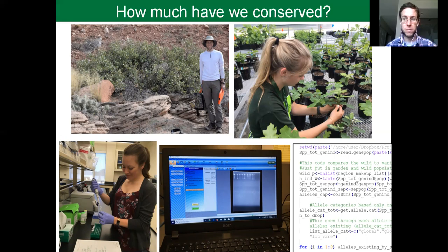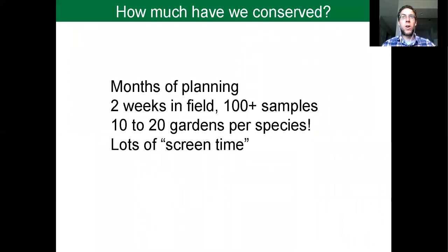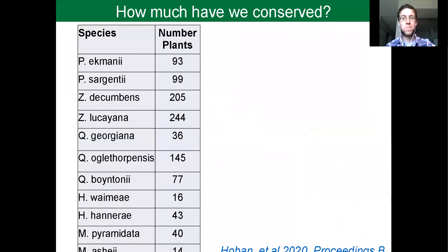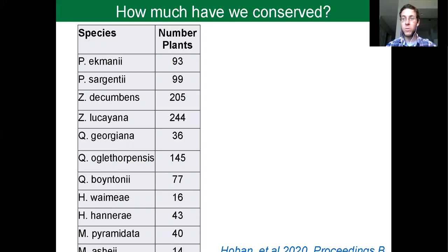A lot of planning, field work, and analysis goes into the results I'm going to show you. Shown here are the number of plants conserved in botanic gardens for these 11 taxa. You can see there's a big range, from about 15 to over 200. Even without looking at genetic diversity directly, we can probably guess that there are very different amounts of genetic diversity conserved among these species.